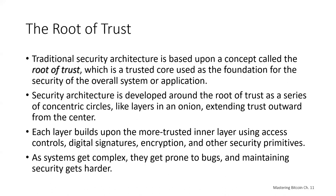As software systems become more complicated, they are more likely to contain bugs, which make them vulnerable to security compromise. As a result, the more complicated the software system becomes, the harder it is to secure. The root of trust concept ensures that most of the trust is placed within the least complicated and therefore least vulnerable parts of the system, while more complicated software is layered around it. The security architecture is repeated at different scales, first establishing a root of trust within the hardware of a single system, then extending it throughout the operating system to higher-level system services, and finally across many servers layered in concentric circles of diminishing trust.